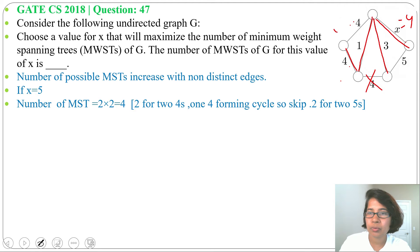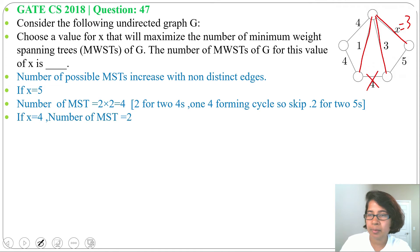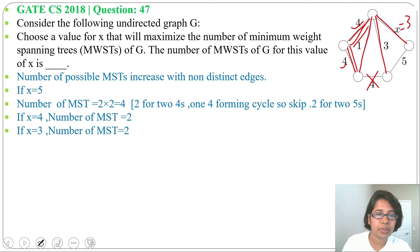Due to those two edges of weight 4, there are 2 minimum spanning trees possible when x equals 4. Now suppose x equals 3. First we choose 1, next 3, then another 3, then skip the 4 that creates a cycle. From the two edges of weight 4, we choose any one. So there are 2 minimum spanning trees possible when x equals 3.